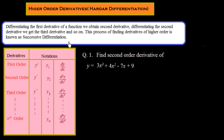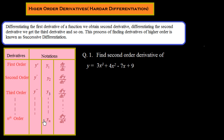First I would like to explain the notation we use for showing different order derivatives. In this table, the first order derivative can be shown as y-dash, y1, or dy/dx. The second order derivative is shown as y-double-dash, y2, or d²y/dx². The third order is y-triple-dash, y3, or d³y/dx³. The nth order derivative is written as yₙ or dⁿy/dxⁿ.